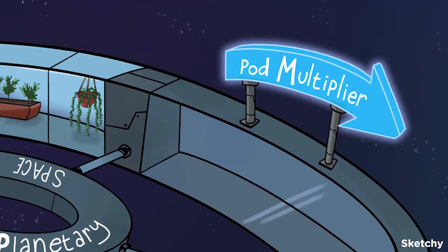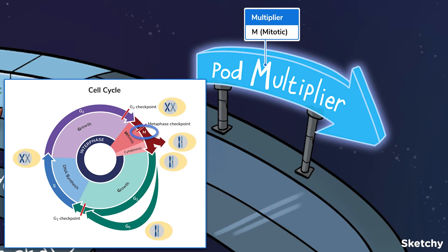And we're off to the multiplier. This is where the space pods get built. Remember that during the M phase, a cell goes through nuclear and cytoplasmic division, creating two daughter cells that share the same number of chromosomes. See our video on mitosis for a whole lot more about this.